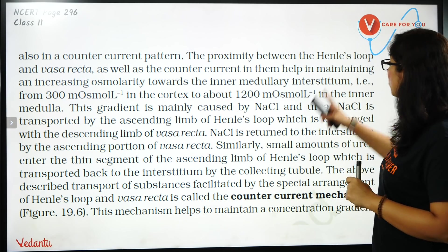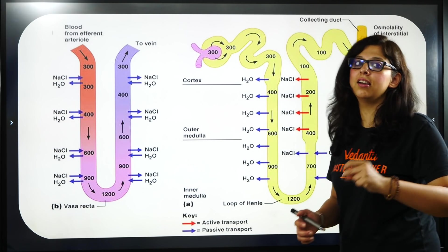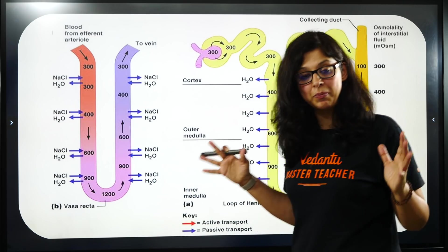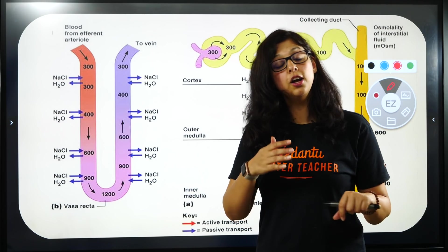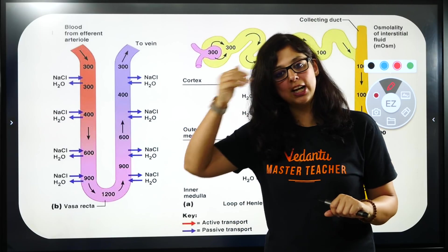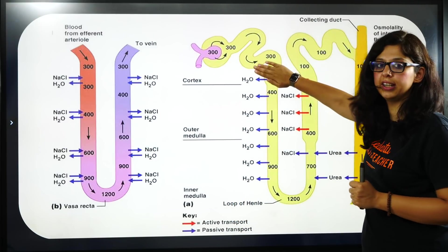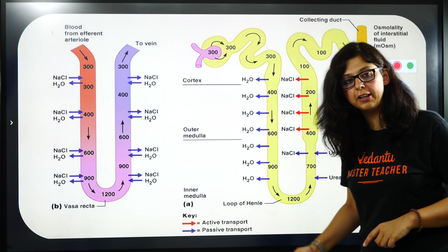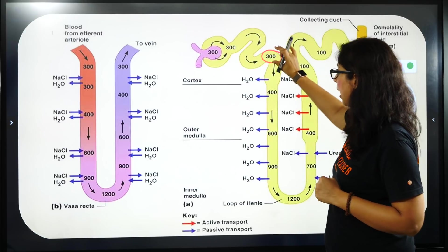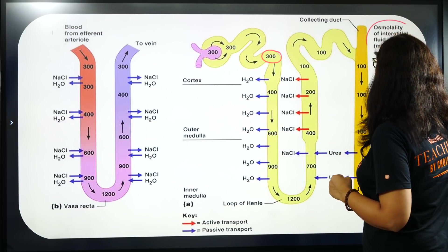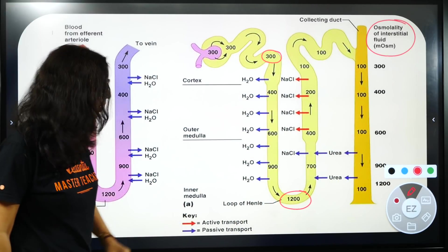The proximity between Henle's Loop and Vasa Recta is key. अब इस paragraph में पहले आपको समझाती हूँ detail में. हमने सारे पानी को reabsorb करना है — अगर मैंने पानी को reabsorb कर दिया, तो जो मेरा urine है वो dilute से concentrated हो जाएगा. मैं हमेशा देखूँगी कि cortex जो kidney का होता है और जो medulla होता है — इनमें osmolarity में difference है. Medulla बीच का part होता है, cortex peripheral part होता है. Cortex में concentration लगभग 300 है और यहाँ लगभग 1200 की value है — इतना ज़्यादा difference है.